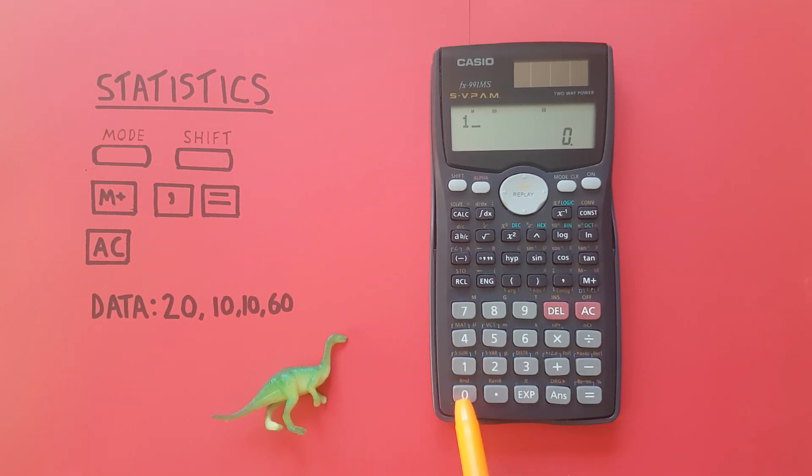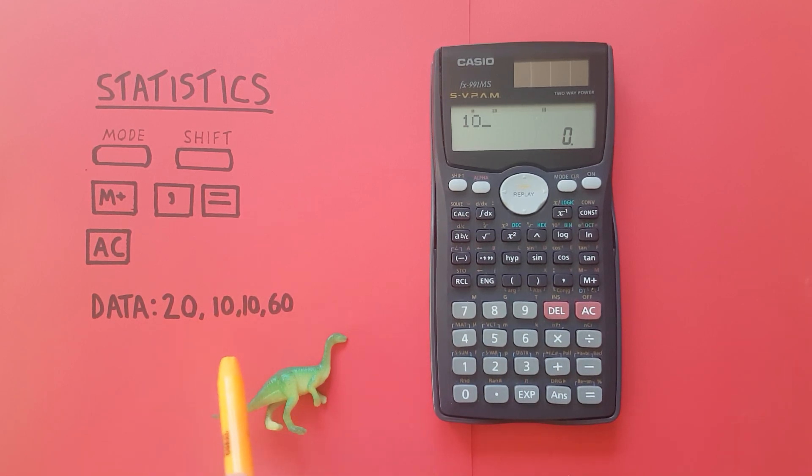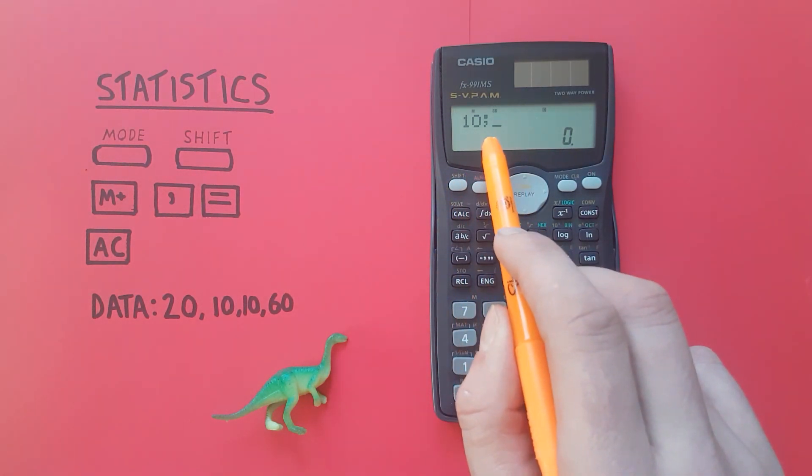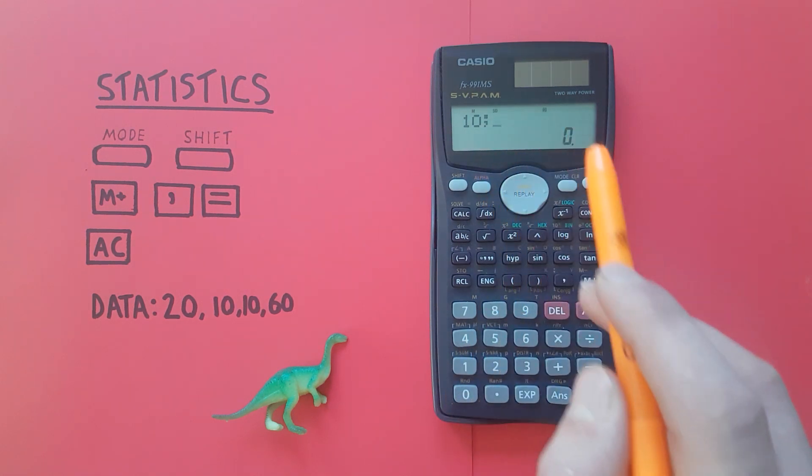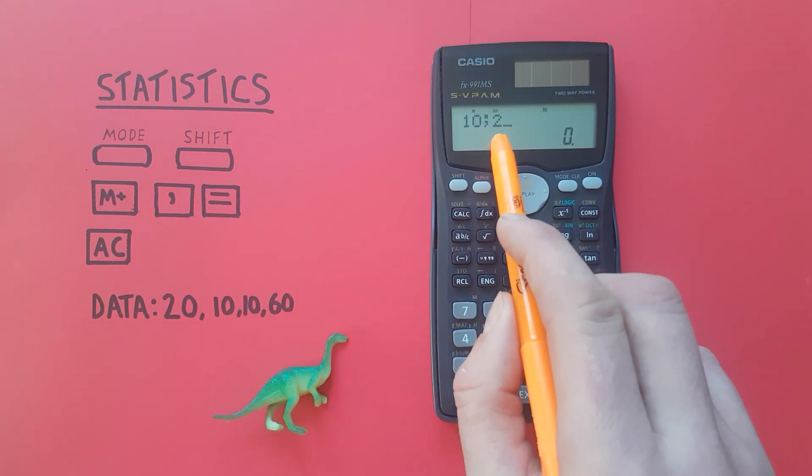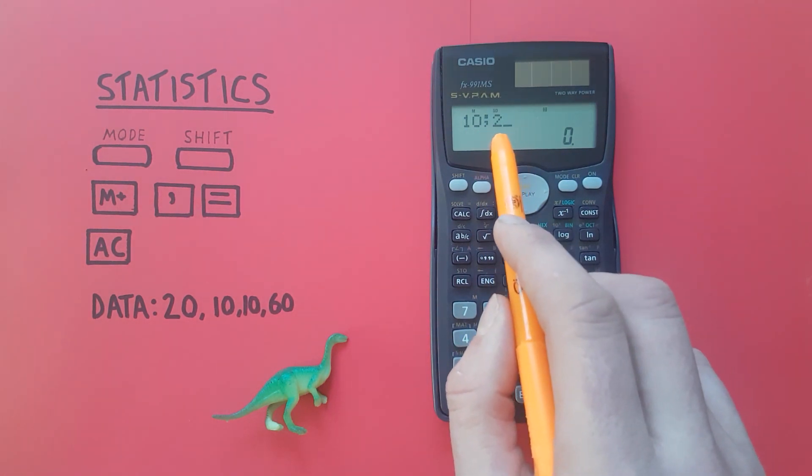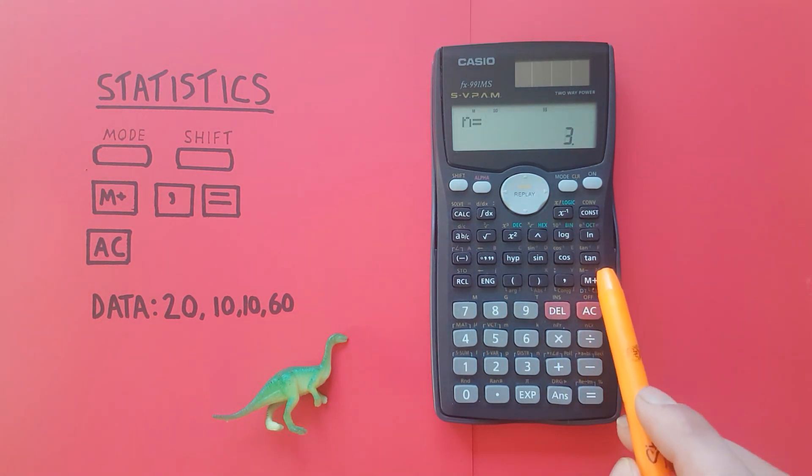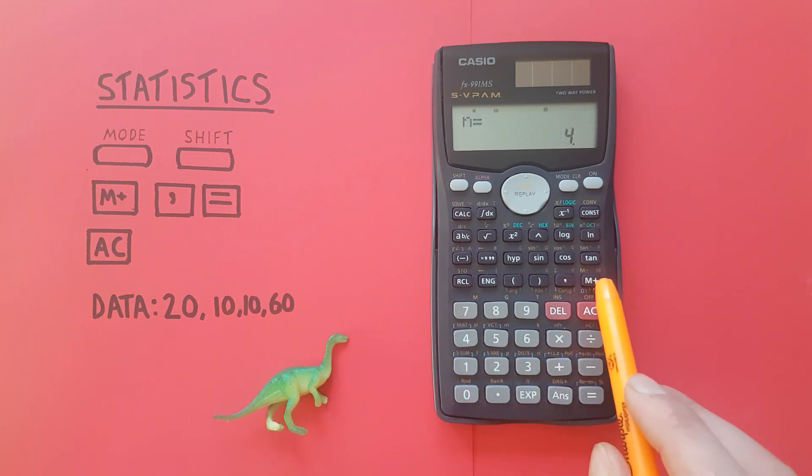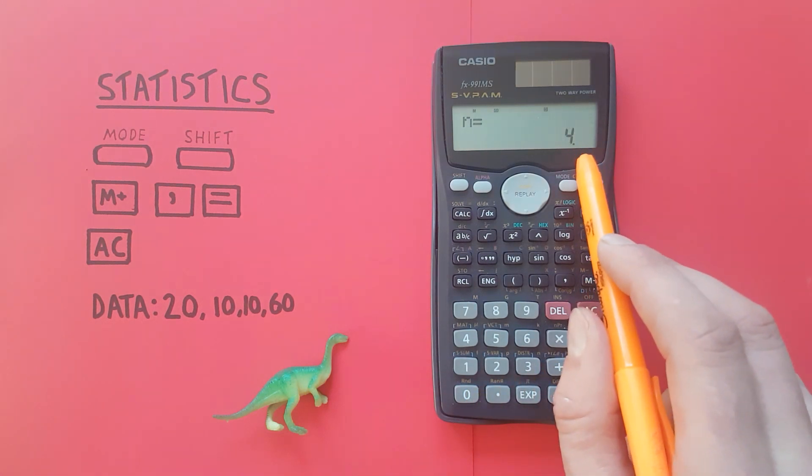Next we have 10 but since we have two tens there and we don't want to enter it multiple times, what we can do is press shift comma which places a semicolon on our screen there and then press 2. What this is saying is 10 entered into our data set twice. So if we had three tens that 2 would be a 3. We then press M plus and we get n equals 3 because we have three objects in our data set and we enter our final one 60. M plus and there we go n equals 4.